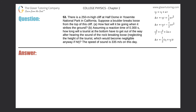Number 53. There is a 250-meter high cliff at Half Dome in Yosemite National Park in California. Suppose a boulder breaks loose from the top of this cliff. How fast will it be going when it strikes the ground? So that's Part A. Let's take a look at that for now.